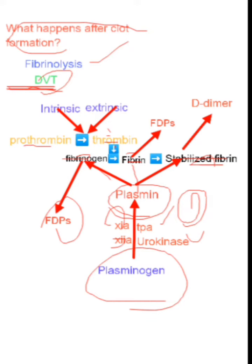So this process summarizes what happens immediately after clot formation. After a clot has been formed, it must be degraded, because too much clotting might lead to conditions such as DVT.